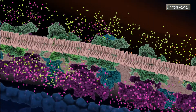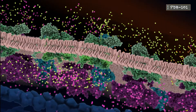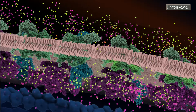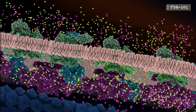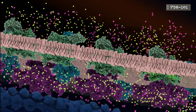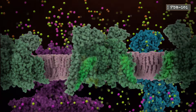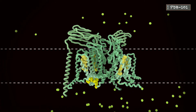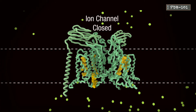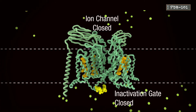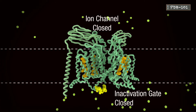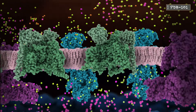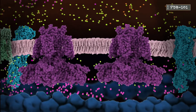This process of continuous amplification is called an action potential. To prepare for the next action potential, the neuron must terminate the signal. This occurs in four steps. At a critical point, the sodium channels close and become temporarily inactivated, blocking further sodium ion entry.